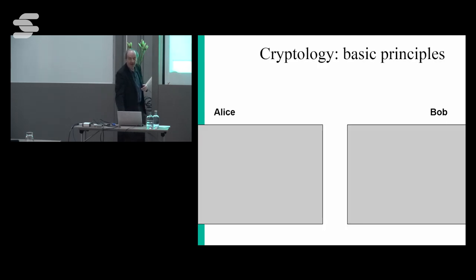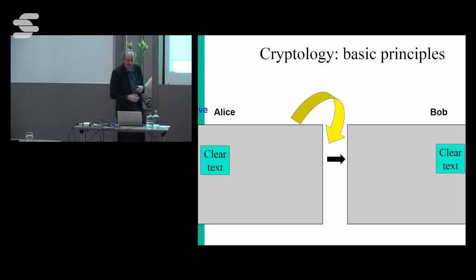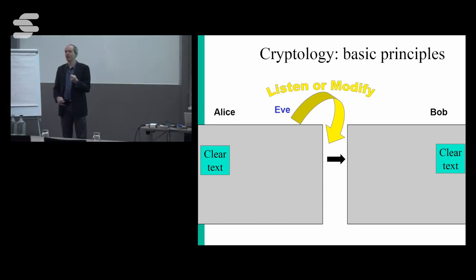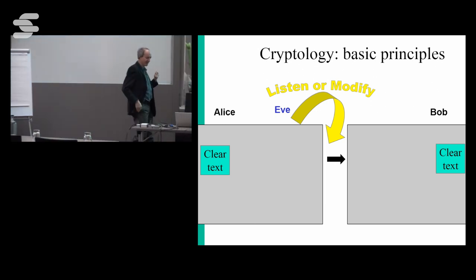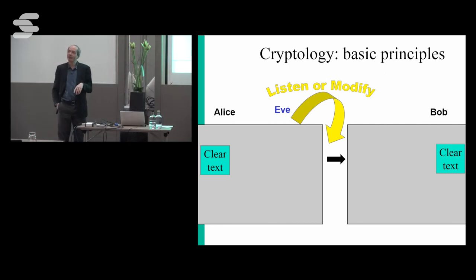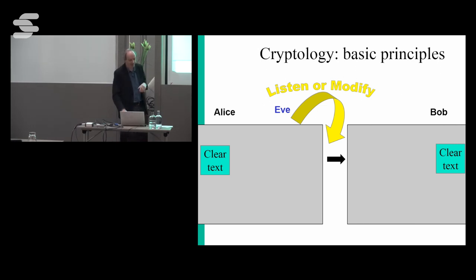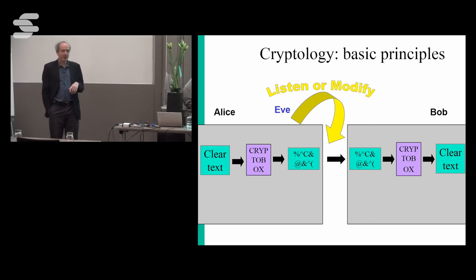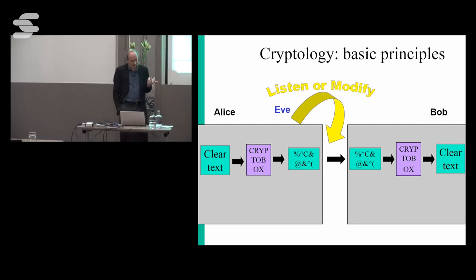The two most famous people in cryptography are Alice and Bob. Alice wants to send messages to Bob — we call this clear text or plain text. There is also a third person, Eve, who makes sure we have a living. Eve tries to listen — 'Eve' is actually the part of the house that's sticking out, and so Eve sits under the eaves and tries to listen or modify stuff. To protect themselves, Alice and Bob buy a crypto box. With this crypto box they can turn plain text into ciphertext. But in the modern world, Eve can just buy the same crypto box.